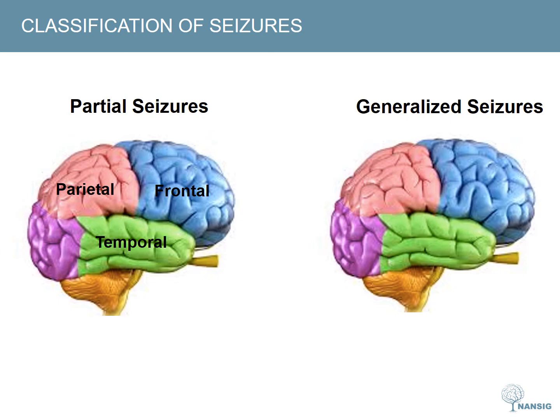Temporal seizures are characterised by a complex aura with four key disturbances. First, a visceral disturbance such as gustatory or olfactory hallucinations, lip smacking, choking, or nausea. Secondly, a memory disturbance such as deja vu, jamais vu, depersonalisation or derealisation.